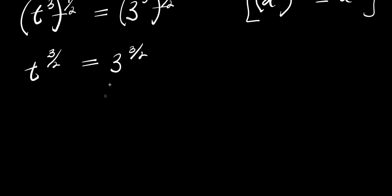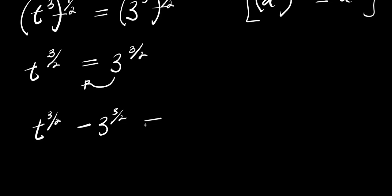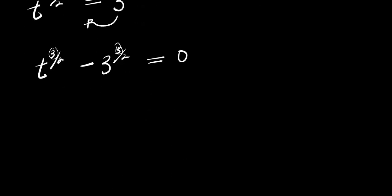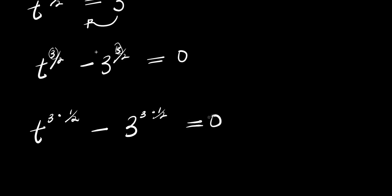Now what we can do is move this over here. We have t to the power three over two minus three to the power three over two equals zero. At this point I can factor out the three here and the three here, so what I am going to have is t to the power three times one over two, minus three to the power three times one over two, equals zero.